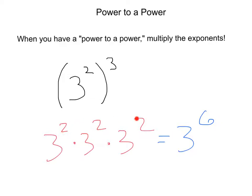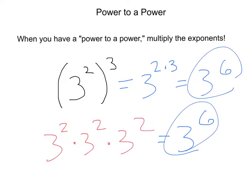We did 2 three times or 2 times 3. So instead of rewriting it all, we could do 3 to the 2 times 3 to get the same thing, 3 to the sixth power. So whenever you have multiple exponents, you want to multiply them.